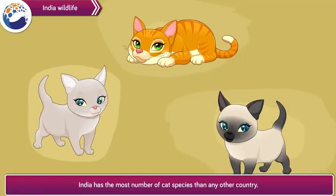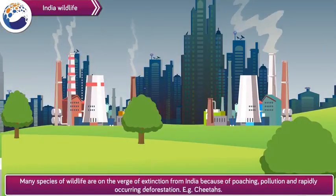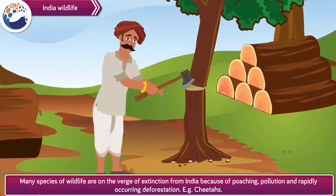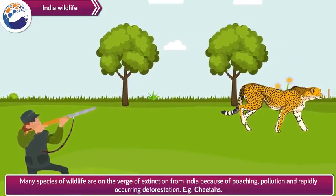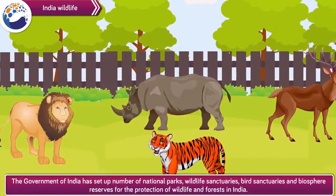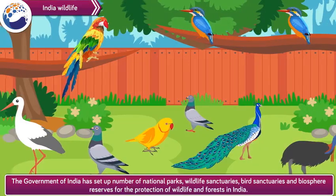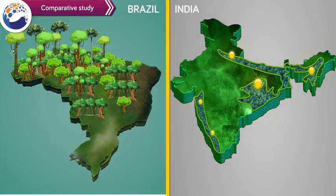India has the most number of cat species than any other country. Many species of wildlife are on the verge of extinction from India because of poaching, pollution and rapidly occurring deforestation. One of those species is cheetahs. The government of India has set up a number of national parks, wildlife sanctuaries, bird sanctuaries and biosphere reserves for the protection of wildlife and forests in India.